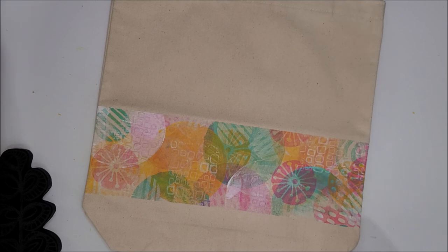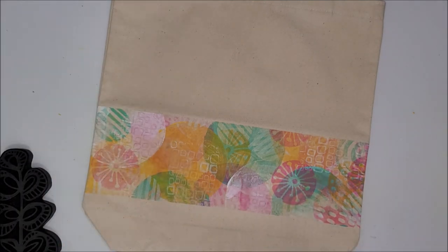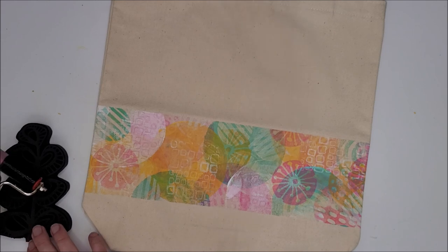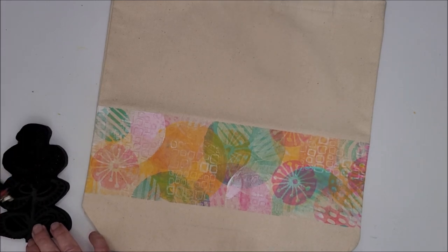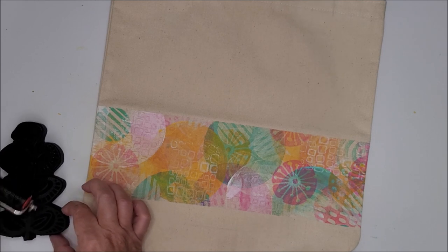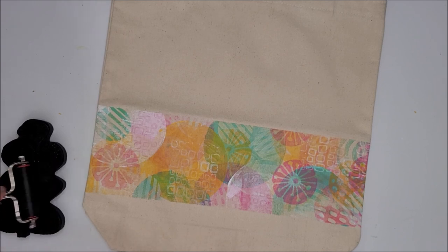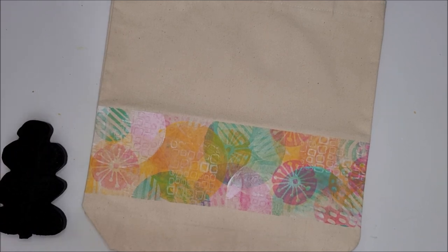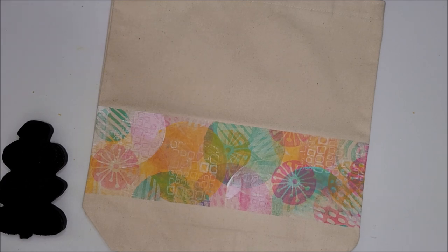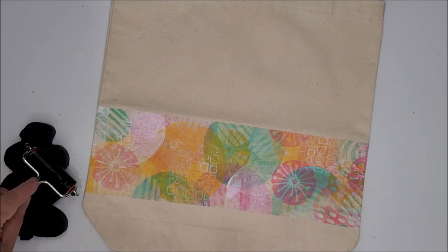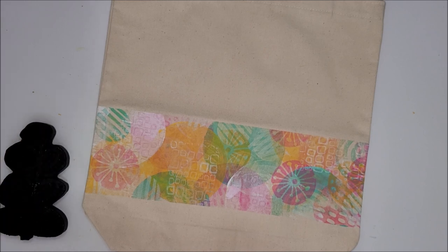So I'm just going to apply some black paint to the stamp. I'm just going to use my brayer. Always a little tricky to see if I've got complete coverage with black with the stamps being black as well. So I'm just going to make sure I've got plenty on there.